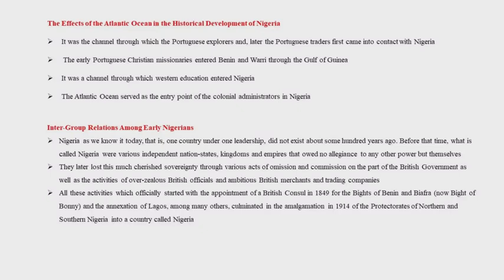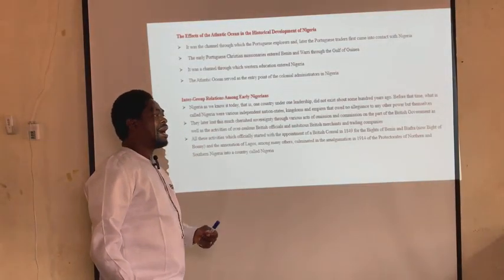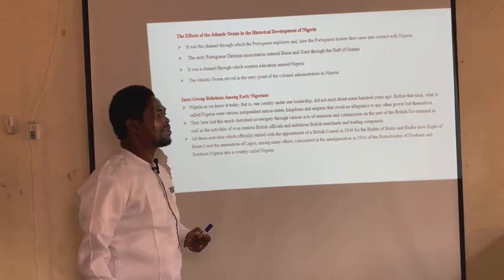We are now going to look at the effects of the Atlantic Ocean on the development of the Nigerian area. The first effect is that it was a channel through which Portuguese explorers and later Portuguese traders first came into contact with Nigerian people. Secondly, early Portuguese Christian missionaries entered Benin and Warri through the Gulf of Guinea. The third effect is that it was a channel through which Western education also entered Nigeria. The fourth effect is that it served as the entry point for colonial administrators.